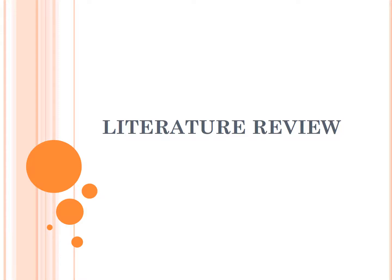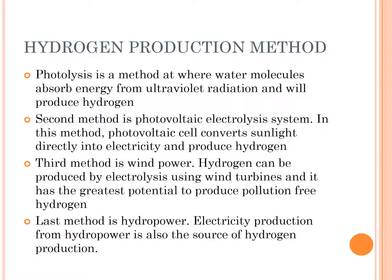Next is literature review. The first hydrogen production method is photolysis, where water molecules absorb energy from ultraviolet radiation to produce hydrogen. The second method is photovoltaic electrolysis, where a photovoltaic cell converts sunlight directly into electricity to produce hydrogen. The third method is wind power, where hydrogen is produced by electrolysis using wind turbines, which has the greatest potential to produce pollution-free hydrogen. The last method is hydropower, where electricity production from hydropower is also a source of hydrogen production.